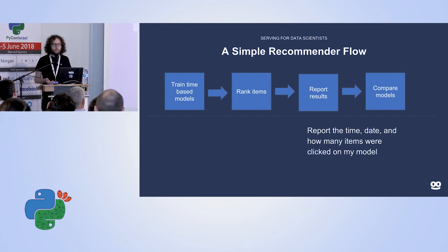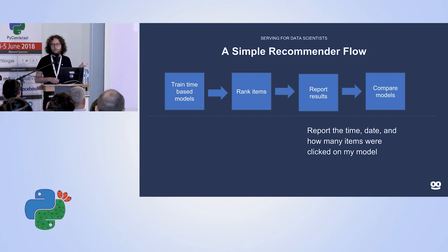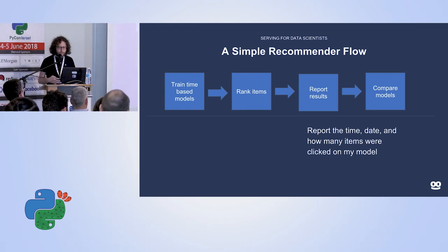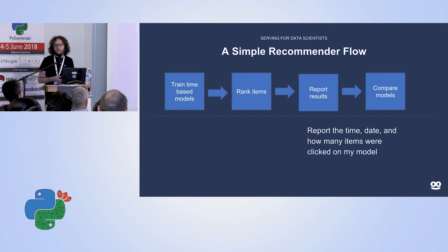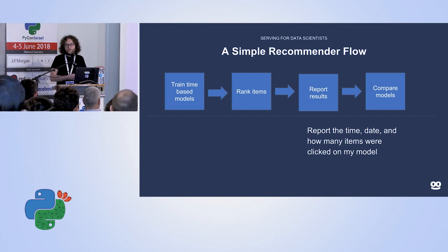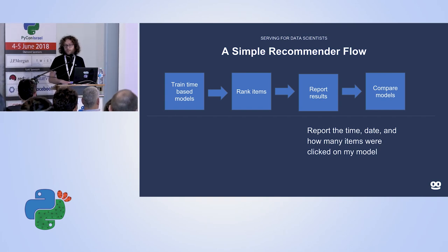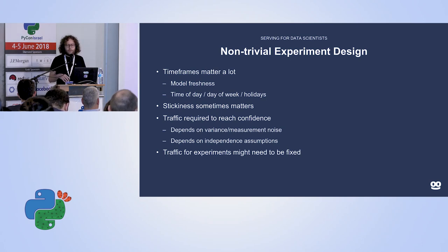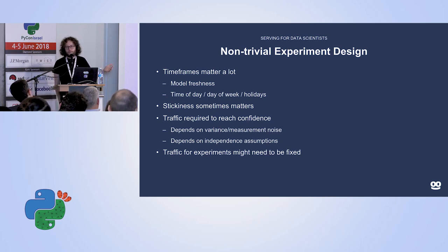With a model like that, we look at all our items, apply the model, rank by click probability, and show items with the highest probability. We report the time, date, title, and whether items were clicked. Now we can compare this model to a random recommendation model — which would you guess is better? I would actually guess the random model, because this model probably shows the same things every hour and can't know how many times you've seen an item.